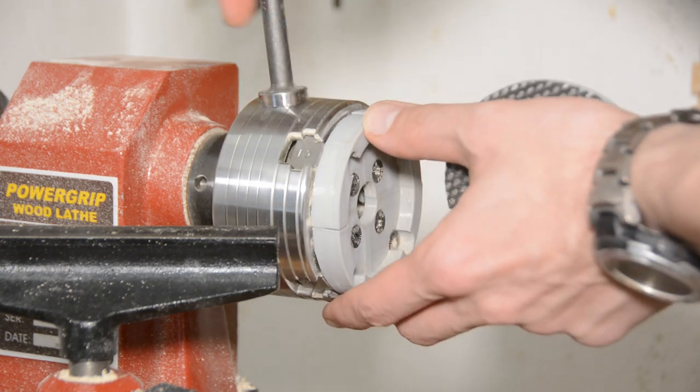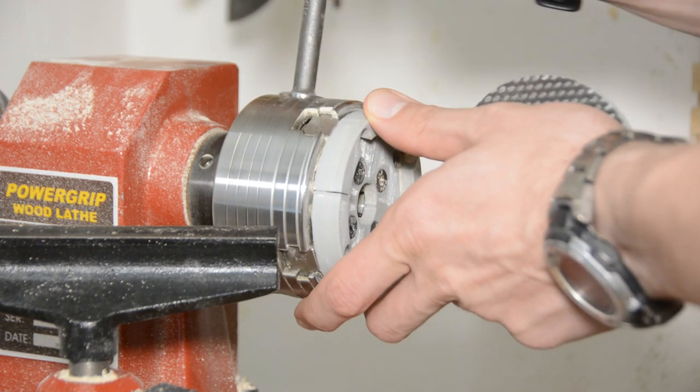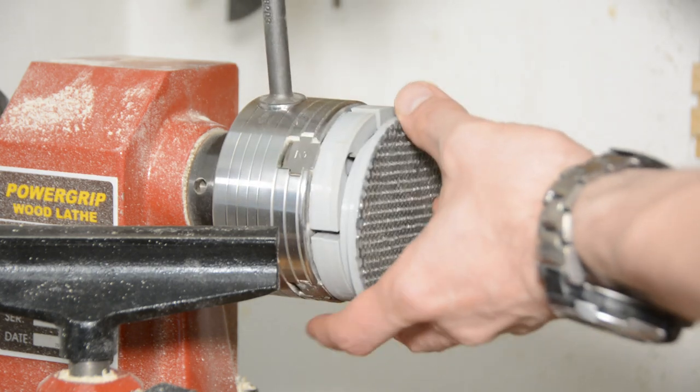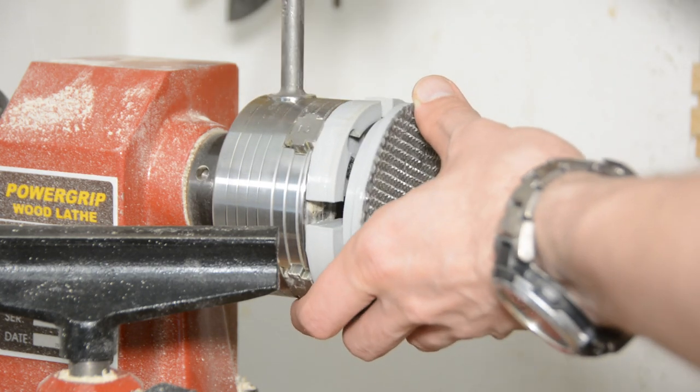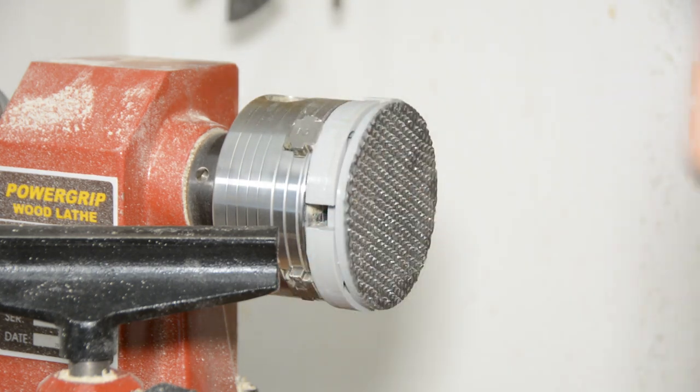After mounting this plate in the chuck, we can use a simple 3D printed cover that we put over the tailstock and then firmly press the wood with the tailstock against the plate.